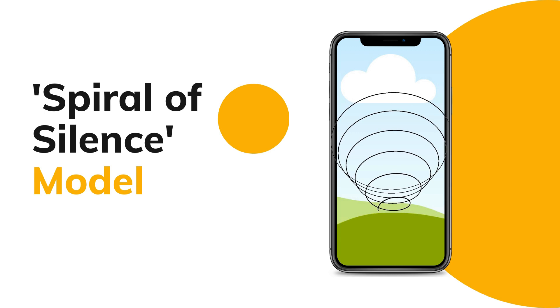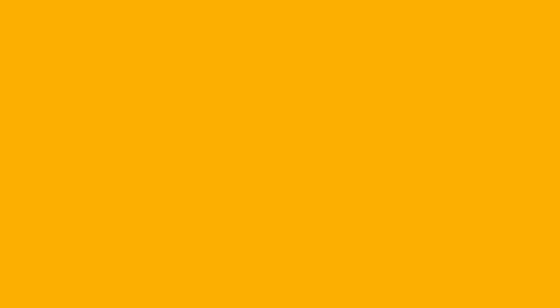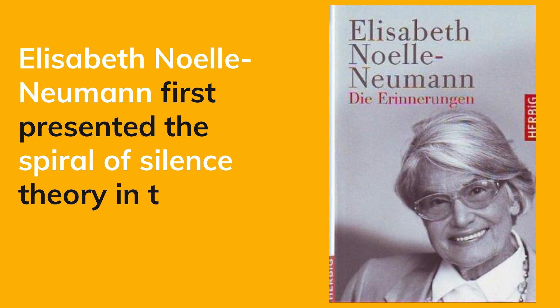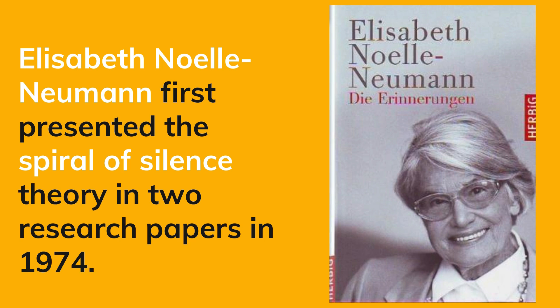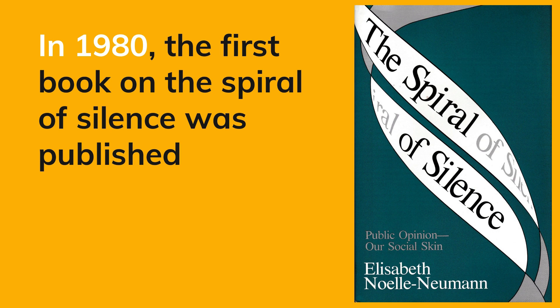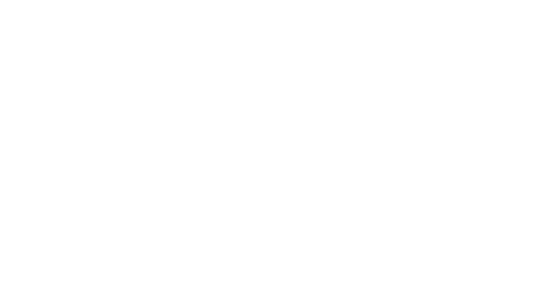The Spiral of Silence discusses how media representations impact an individual's social behavior. The theory was first proposed by German social scientist Elizabeth Noel Newman, who presented it in two research papers published in 1974. She followed this up with two books — one in 1980 in German and another in 1984 in English — called The Spiral of Silence: Public Opinion, Our Social Skin.